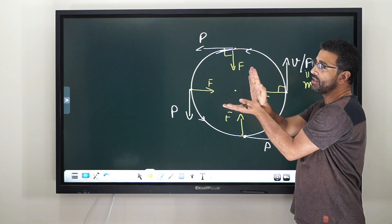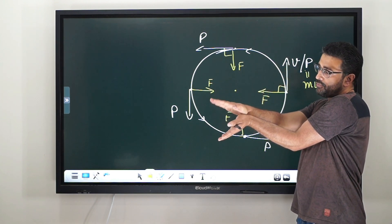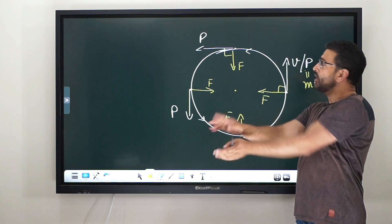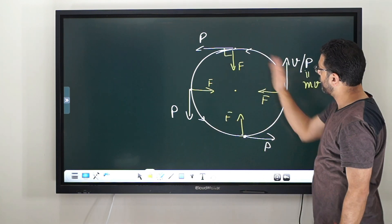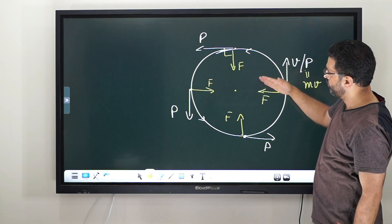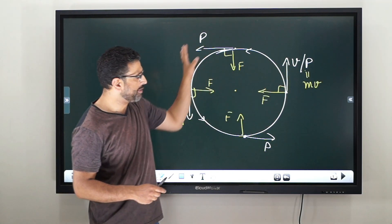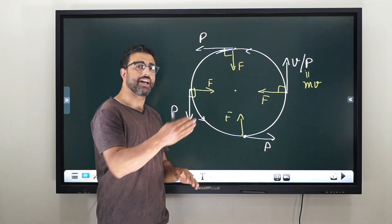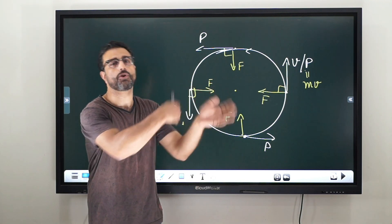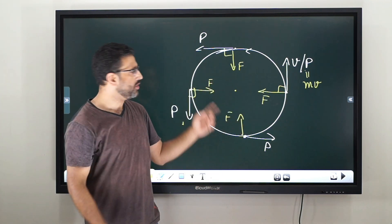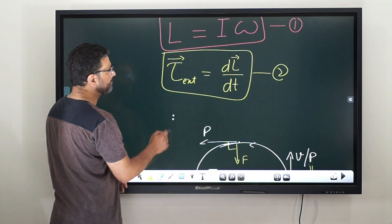So momentum is coming here, and force is moving further away. That process continues — momentum chases the force, and force keeps moving away. This continues and circular motion results. The same thing will happen with angular momentum and torque.